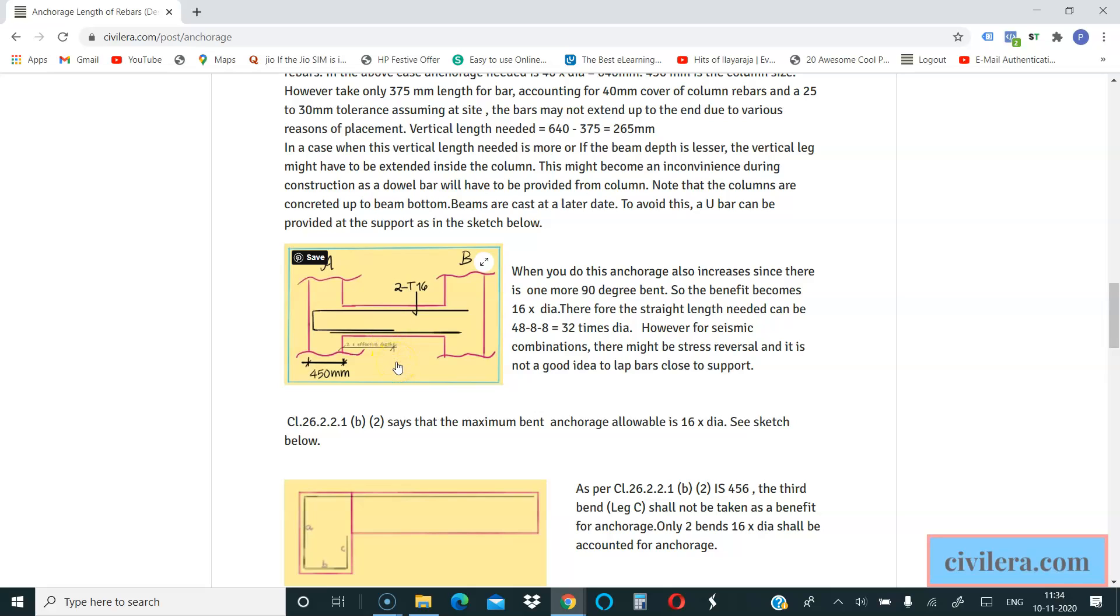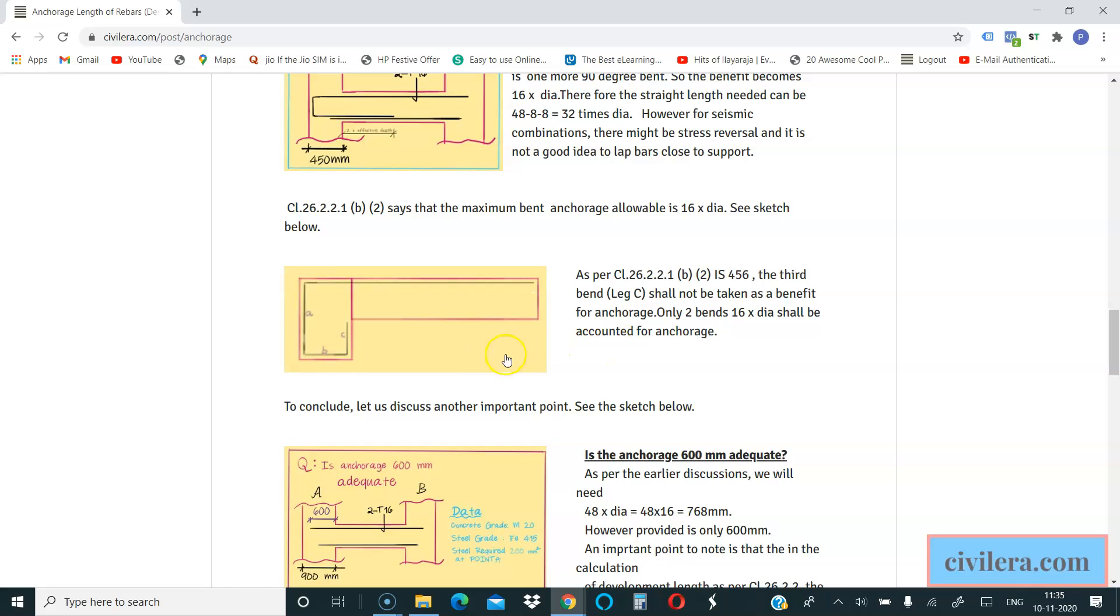This particular detail is generally used in Middle East, and that will ensure that you have the anchorage and you also don't have to leave the double bars when you have a shallow beam and you are not getting the required development length without anchoring into the column. Now the next figure explains that bending your bar more than couple of times is not beneficial because code doesn't allow you to take more than 16 times diameter.